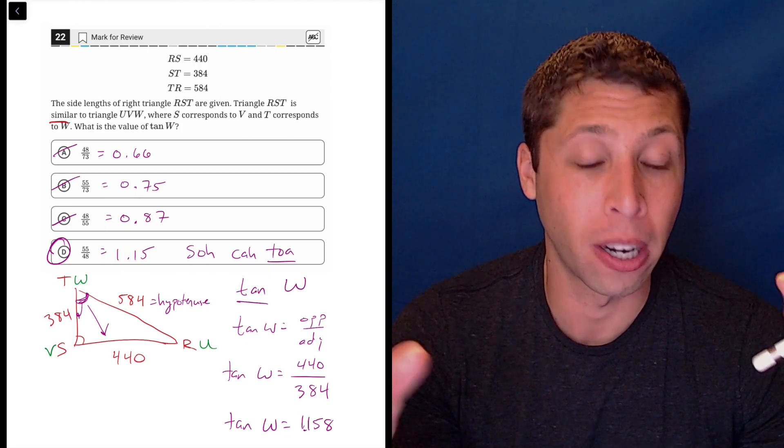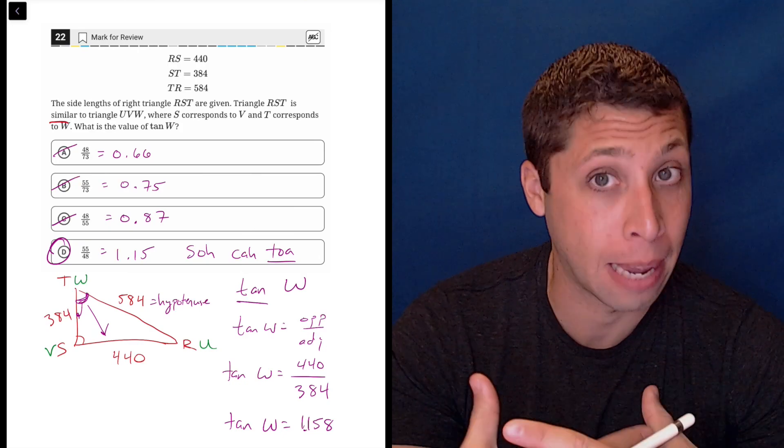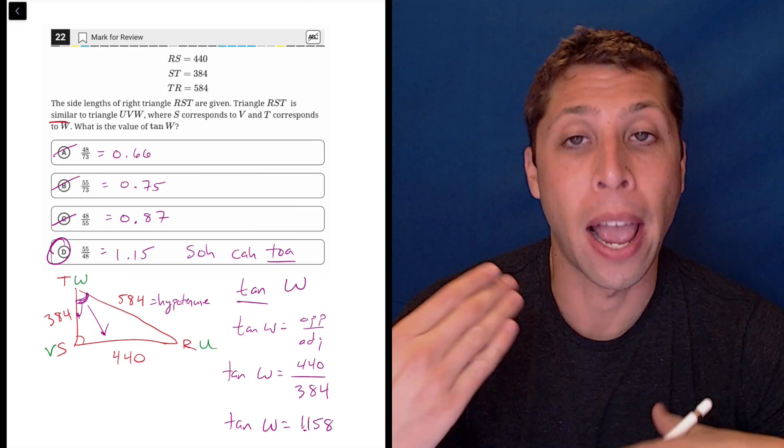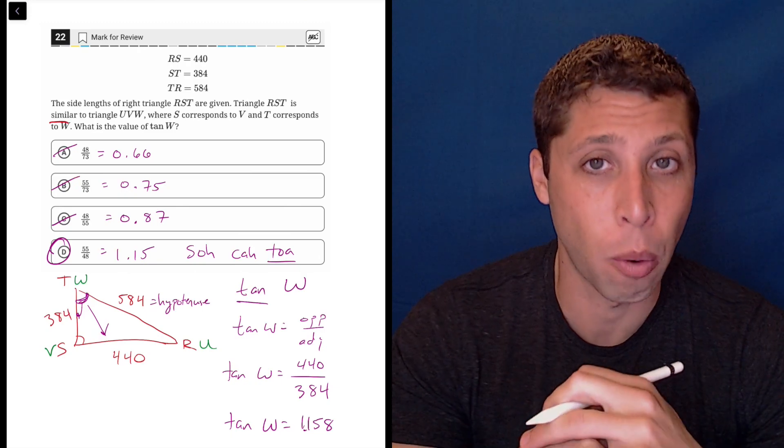If we have two triangles that are similar, we can kind of treat them as the same because it's really about how the sides compare, and with a fraction it's always going to reduce to what we want.